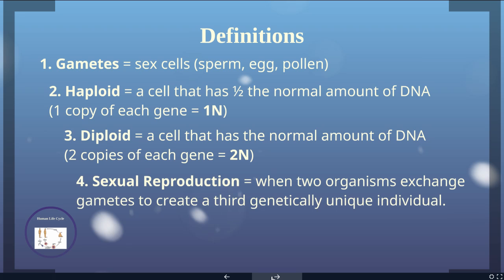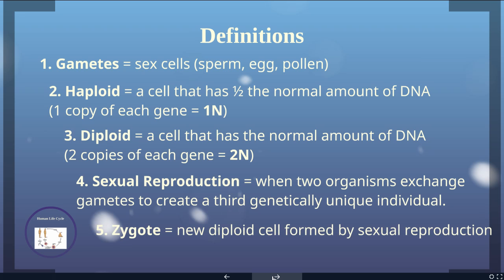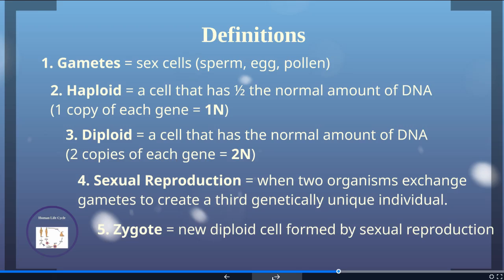Sexual reproduction is when two organisms exchange gametes to create a third genetically unique individual. The zygote is the name of the new diploid cell that's formed by sexual reproduction.